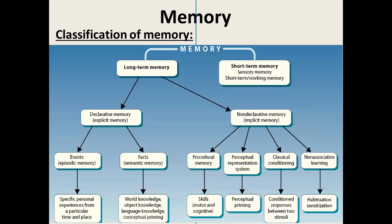Memory is classified into long-term memory and short-term memory. Short-term memory includes working memory or sensory memory. Long-term memory is again divided into declarative memory — also termed explicit memory — and non-declarative memory, also termed implicit memory.